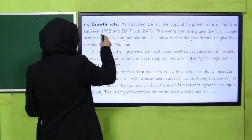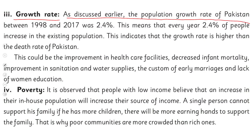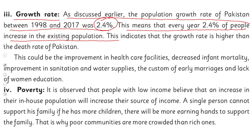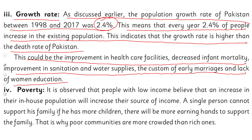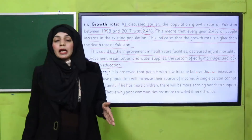The next factor is growth rate. As discussed earlier, the population growth rate of Pakistan between 1998 and 2017 was 2.4%. This means that every year 2.4% of people are added to the existing population. This indicates that the growth rate is higher than the death rate of Pakistan. This could be due to improvement in healthcare facilities, decrease in infant mortality, improvement in sanitation and water supplies, the custom of early marriages, and lack of women's education.